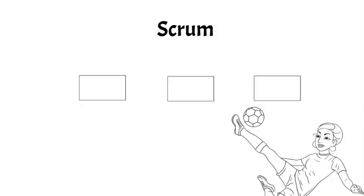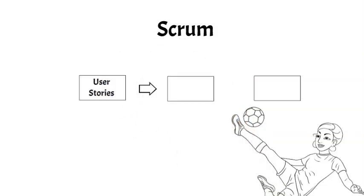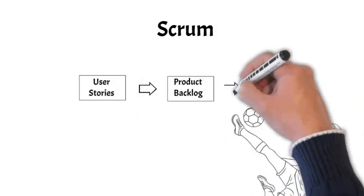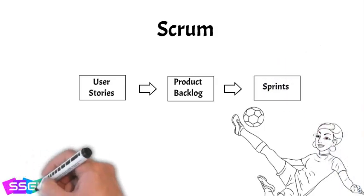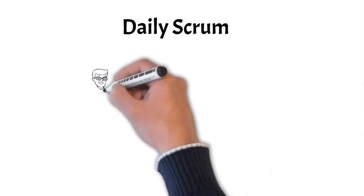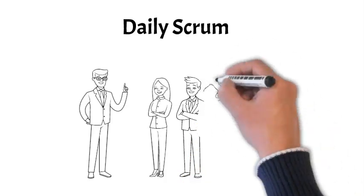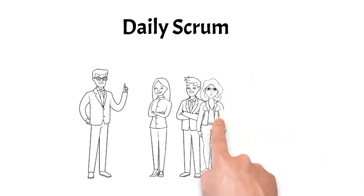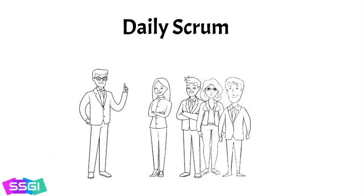Scrum begins with user stories that define the product. It then breaks these stories into a product backlog and schedules these backlog items in sprints. Before each daily sprint begins, teams meet to discuss what they have accomplished yesterday, what they plan to accomplish today, and the problems that are likely to be encountered. These daily scrum meetings are at the very core of scrum.